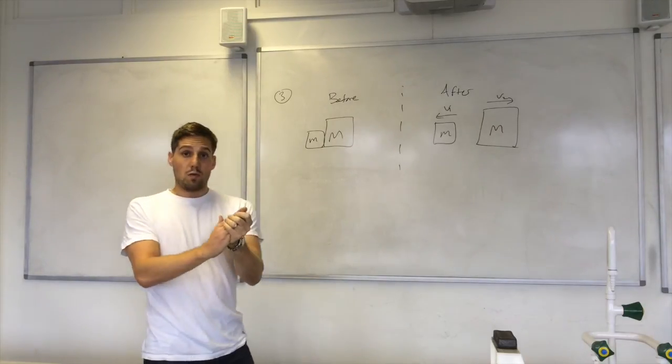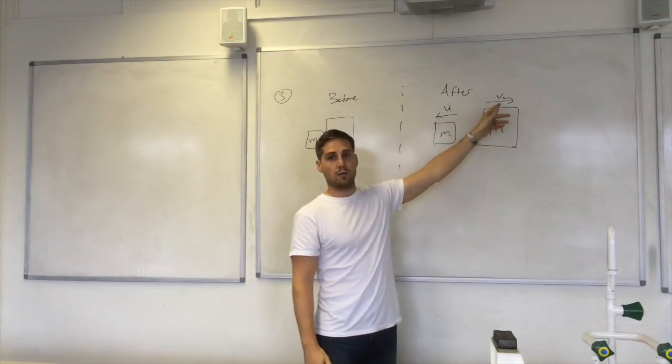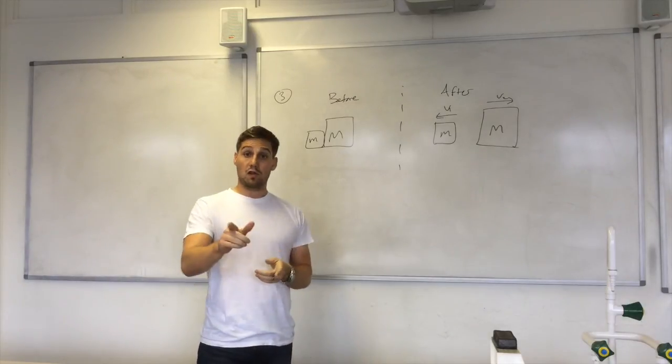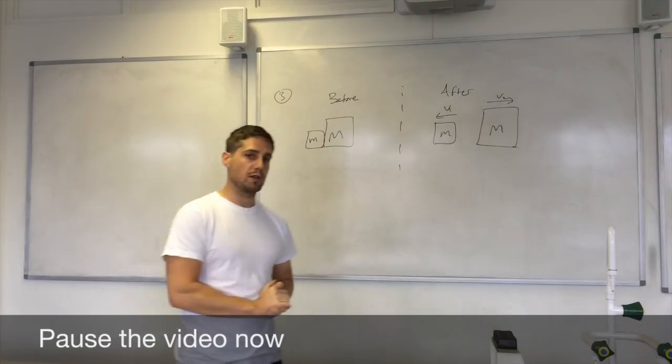So that this smaller mass has a velocity to the left and the larger to the right. What I want you to do is derive an expression for v2. So the expression for v2. Okay, so if you can do that now, go ahead and try doing that. Pause the video and try doing it.